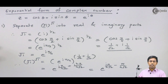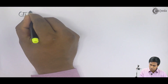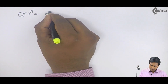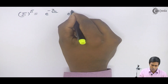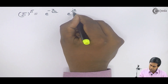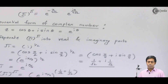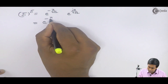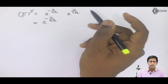Using the law of indices, we can separate these terms. So we get √i raised to √i equal to e raised to −π/(4√2) multiplied by e raised to iπ/(4√2). We have now separated these two terms, keeping e raised to −π/(4√2) as it is and preparing to convert the second term back to polar form.